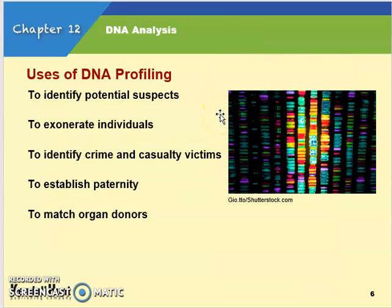So what do we use DNA profiling for in forensics? We use it for identifying potential suspects, exonerating people who may have been suspects, identifying the victim of a crime when their body is too far gone for facial recognition, establishing paternity — like on the Maury show — and to match organ donors.